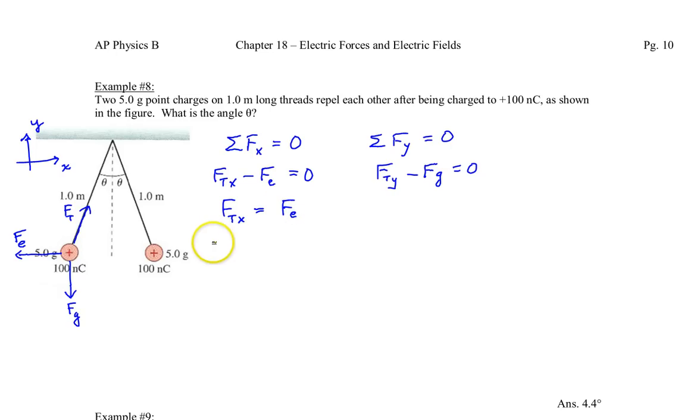Ftx must be equal to Fe. Ftx, now over here this is the angle theta, right in here, that's this angle right in here. So, Ftx is the Ft times the sine of theta, Ft times sine of theta.